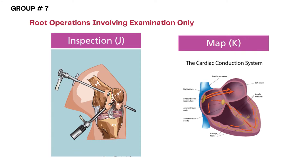There are only two root operations in this seventh group: Inspection and Map. This is one of the easiest groups in ICD-10 PCS to code. Inspection is visualization only, and Map is only for mapping the conduction mechanisms of the heart and the nervous system. We'll talk about Map next, but right now it's all about Inspection.